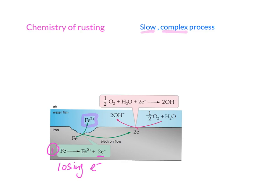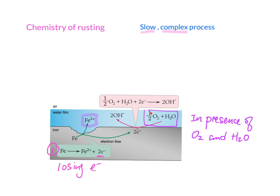The electrons will then be absorbed by the water and oxygen. Remember, the necessary condition for rusting to occur is the presence of oxygen and water. After the electrons are released from the iron, they are taken up by the oxygen and water, and they form hydroxide — that is the second product.